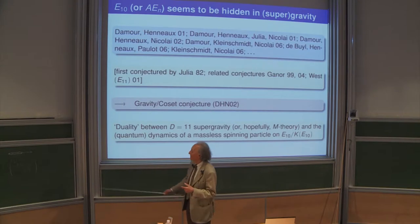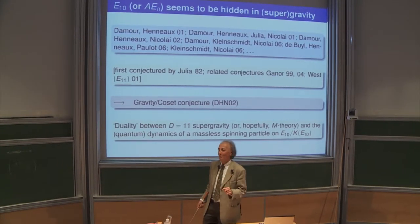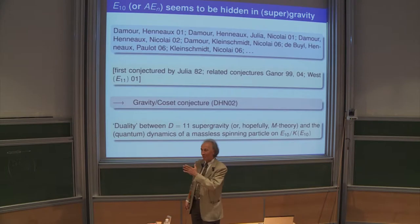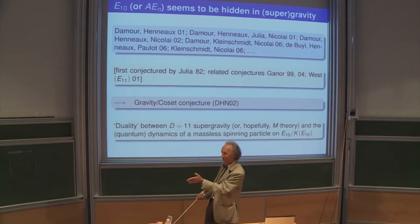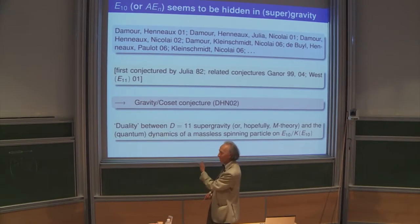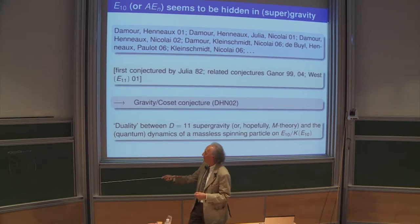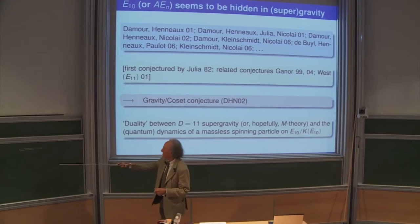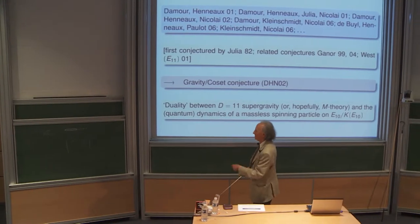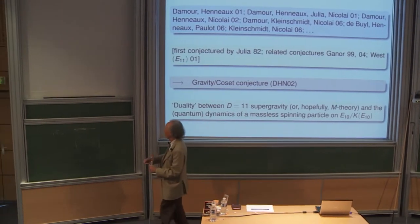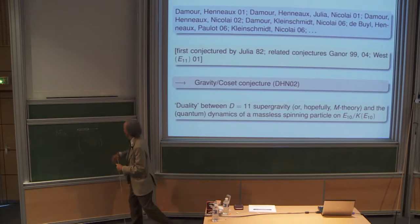Hyperbolic means you have a Cartan matrix with a signature of minus-plus-plus. For E10 it would be minus followed by nine pluses. We will discuss here a rank-three example — the matrix is three-by-three, with the minus-one entries placed appropriately off the diagonal.